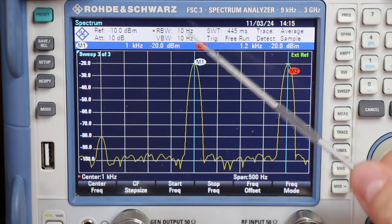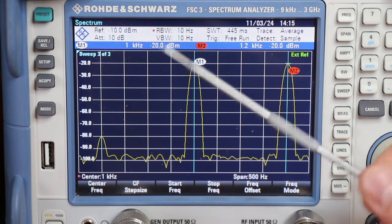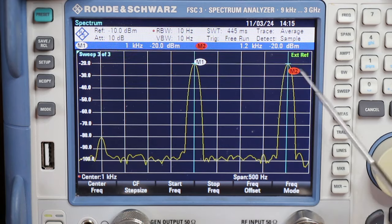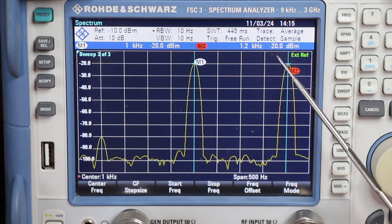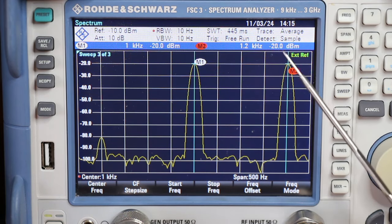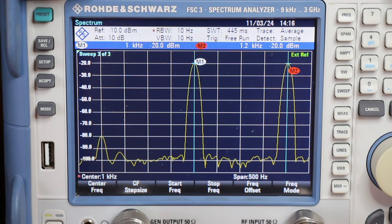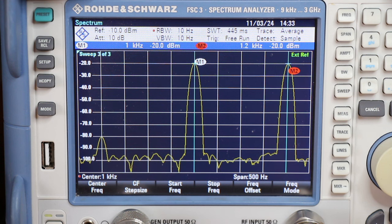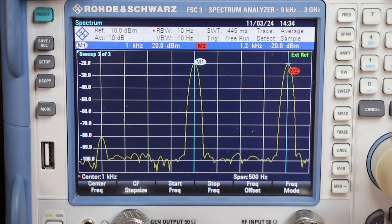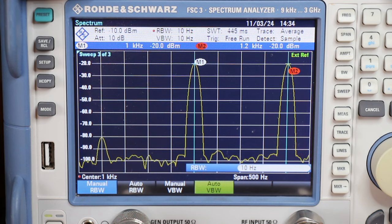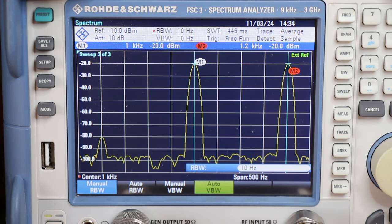The span is 500 hertz or 50 hertz per division. The first tone is 1 kilohertz, the second tone is 1.2 kilohertz, and the level of the tones is minus 20 dBm, exactly the level programmed in the waveform generator. The RBW here was set to 10 hertz. Most low-cost spectrum analyzers nowadays offer this possibility.